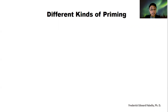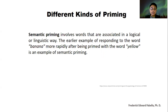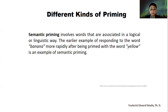Are there different kinds of priming? Yes, let's look at them one by one. Semantic priming involves words that are associated in a logical or linguistic way. The example here is when you chose banana, which is associated to the color yellow.